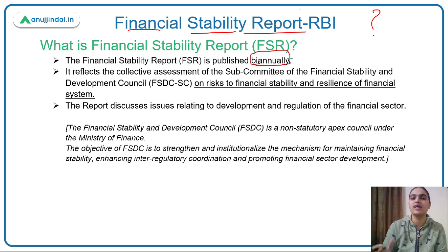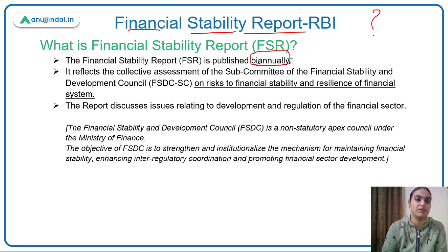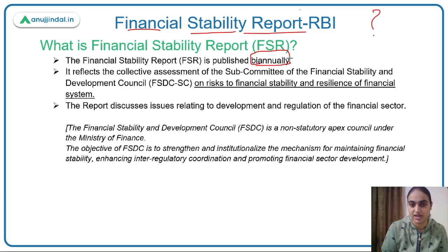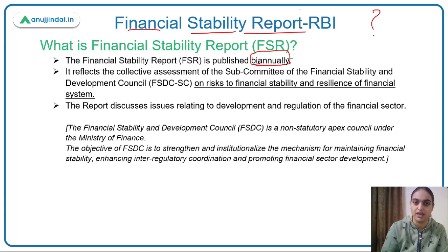The Financial Stability Report tells us the situation of our financial system — how stable it is, what the different risks are, how resilient the financial institutions have been, and what regulatory and development measures have been taken. It covers both global and domestic positions of financial systems. There is a sub-committee under the Financial Stability and Development Council which carries out the entire assessment, and the report is then released by RBI.